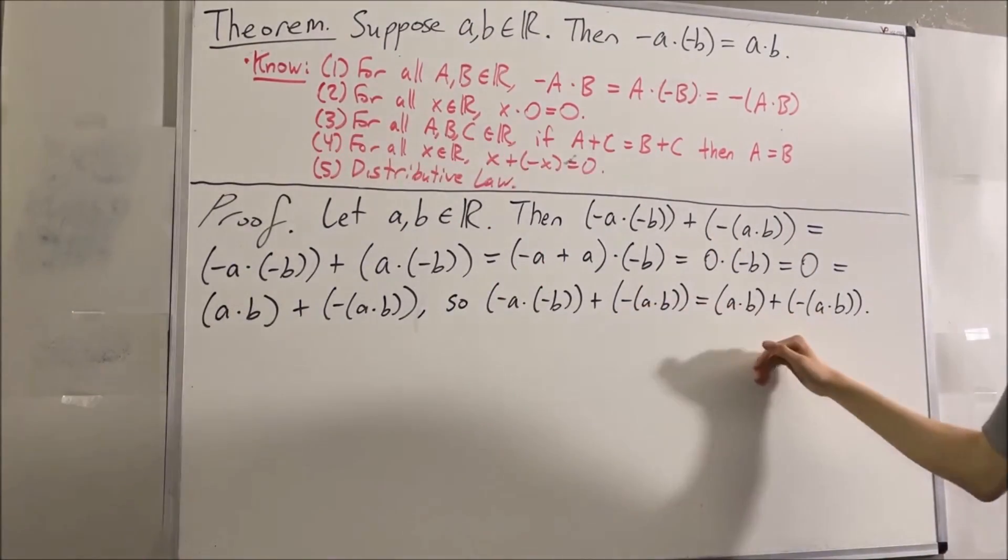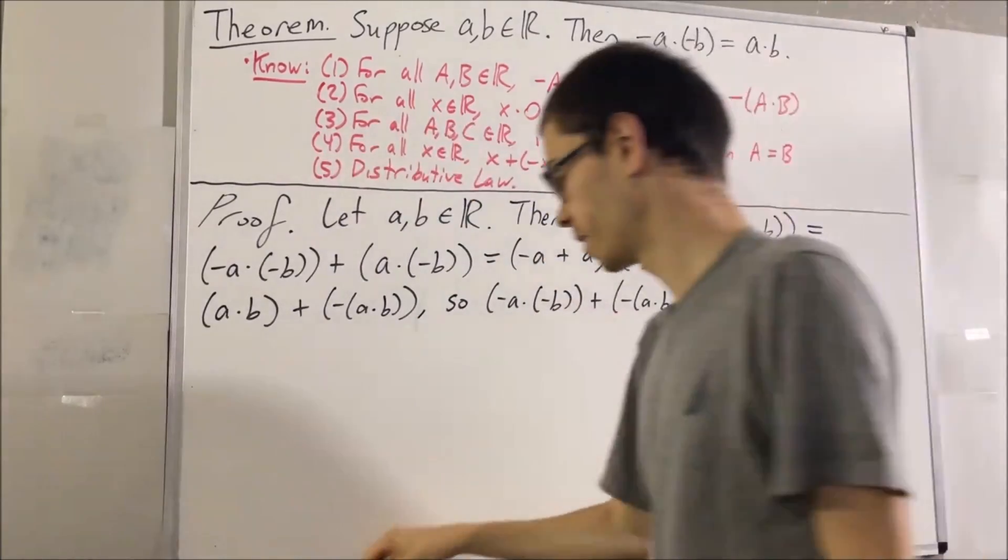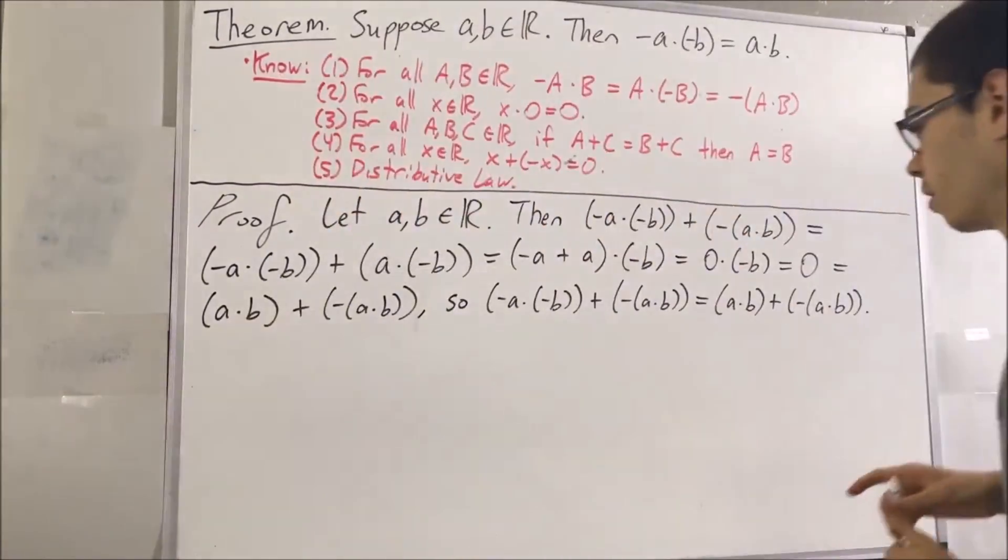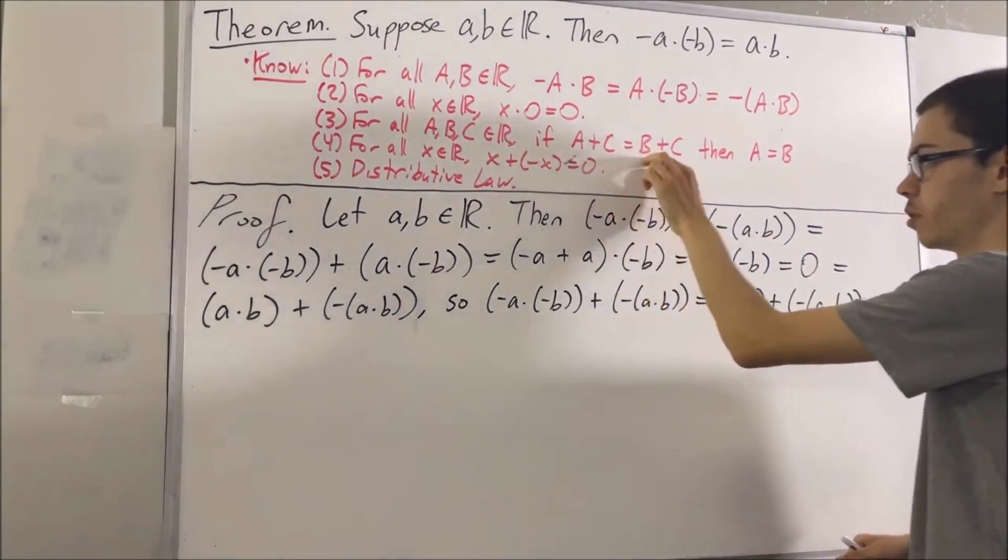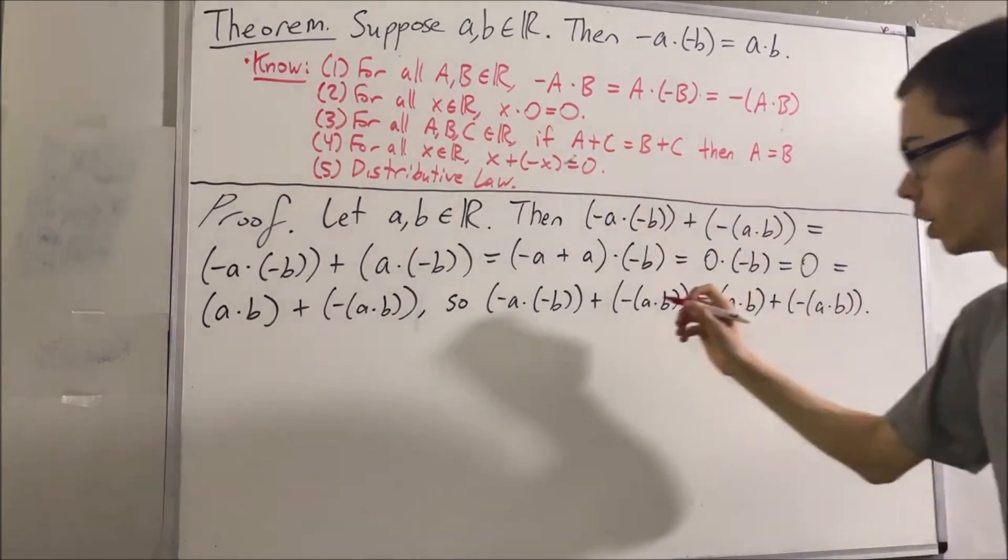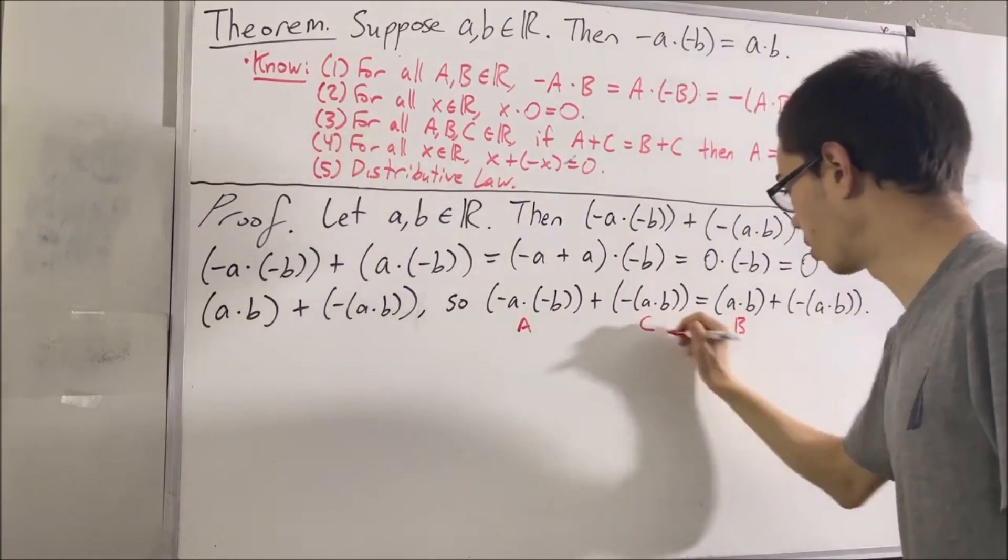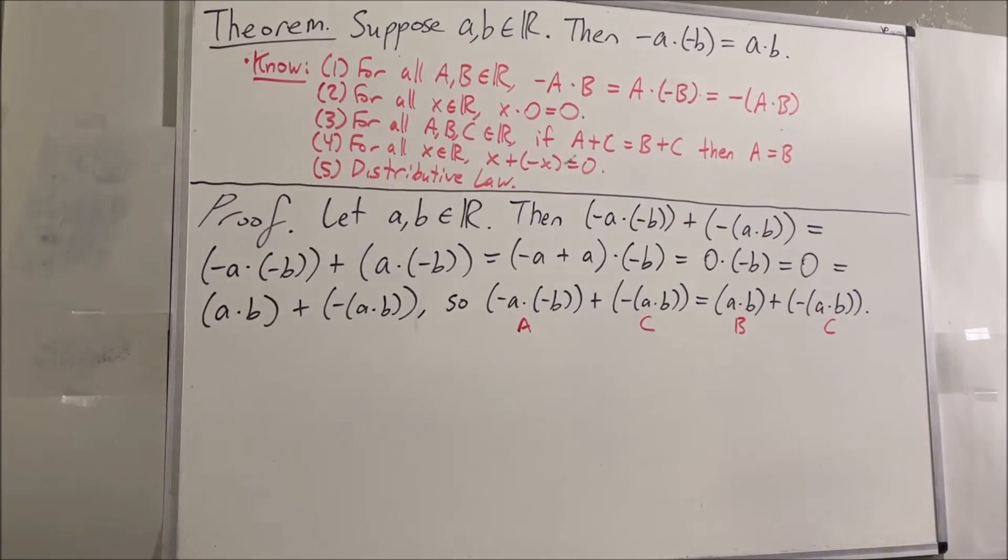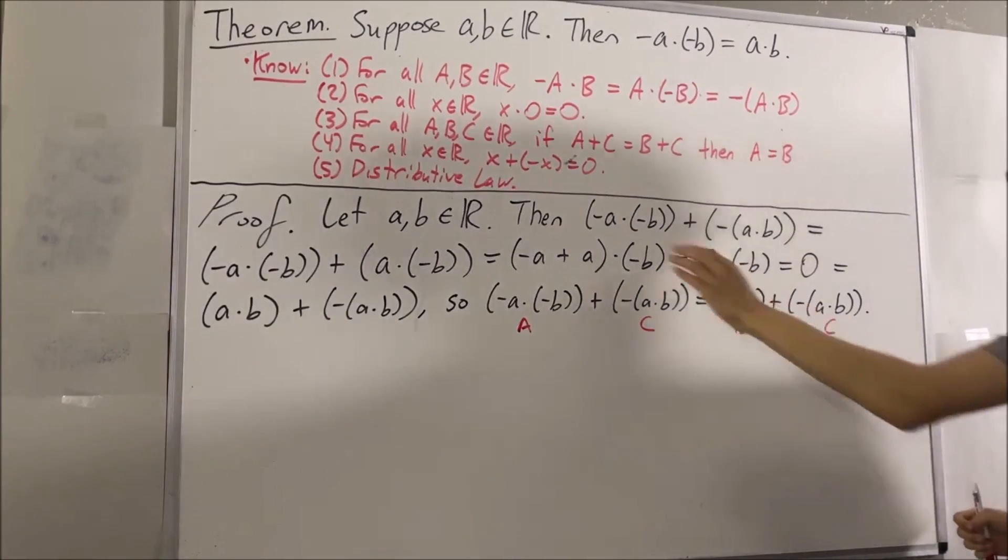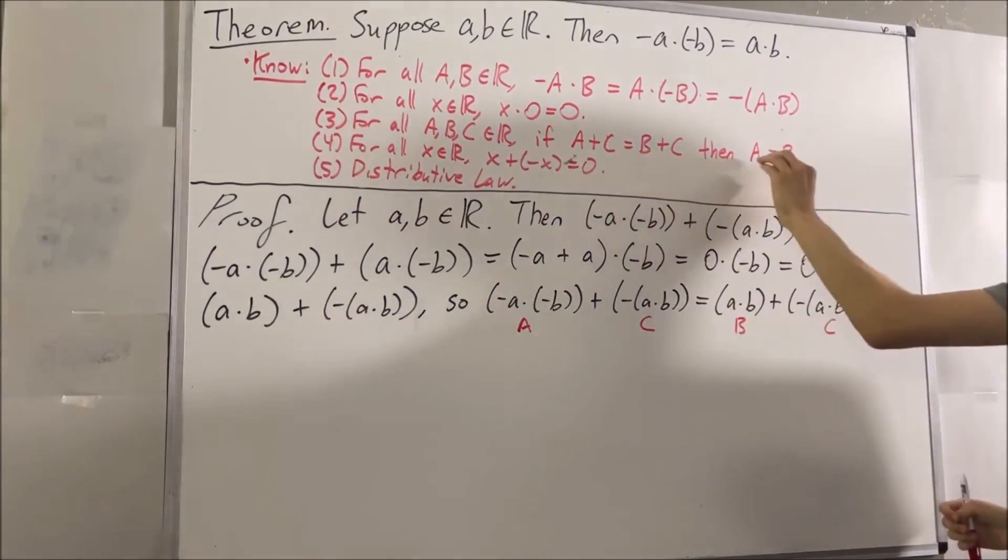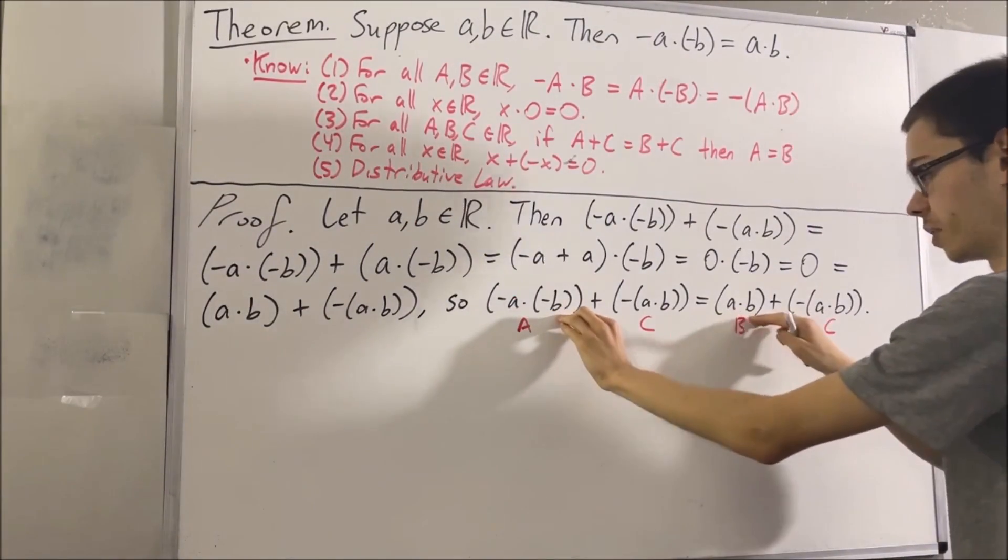And now at this point, we're going to apply fact number three, the cancellation law of addition. We can observe that this is precisely in the form of A plus C is equal to B plus C. Because we could call this A, we could call this B, and call these two guys C. We see that A plus C is equal to B plus C. So by fact number three, this implies A is equal to B, which means we have that this is equal to this.